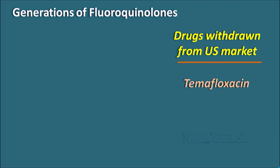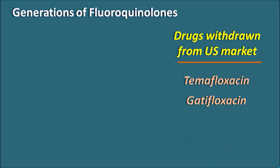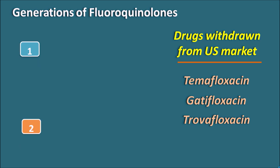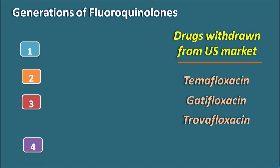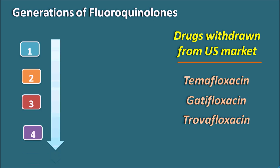Drugs withdrawn from the US market include temafloxacin, gatifloxacin, and trovafloxacin due to toxic reactions. Based on the drugs available today, fluoroquinolones can be classified into four generations: first, second, third, and fourth generation. As we pass from the first to the fourth generation, the spectrum of activity changes.